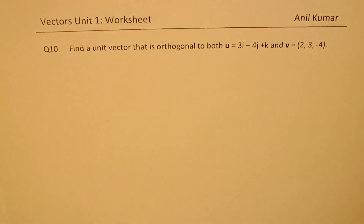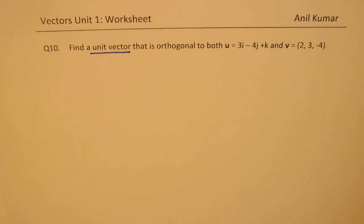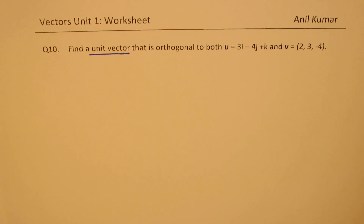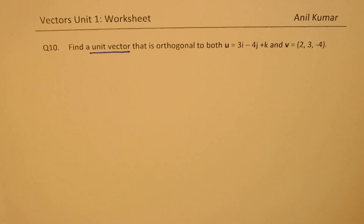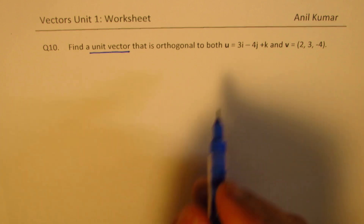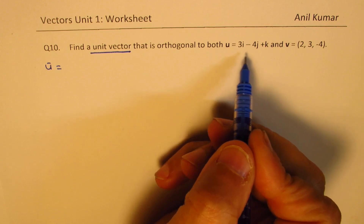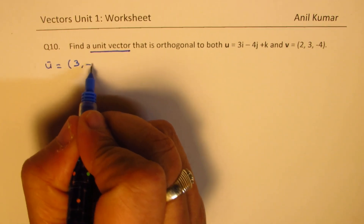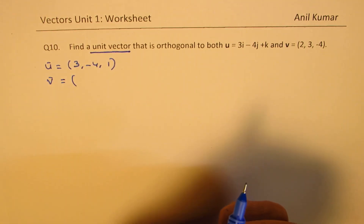Now let's take the related question, question number 10. This is very similar to question 9. The difference is it asks to find a unit vector that is orthogonal to two vectors. I'd like you to pause the video, answer the question, then look at my suggestions for confidence in understanding the concepts. So we are given vector u=(3,-4,1) and vector v=(2,3,-4).